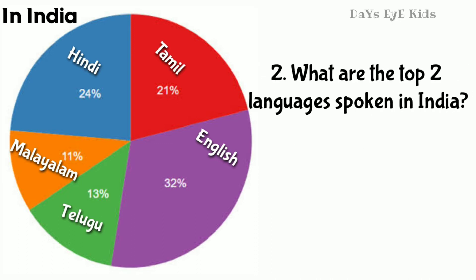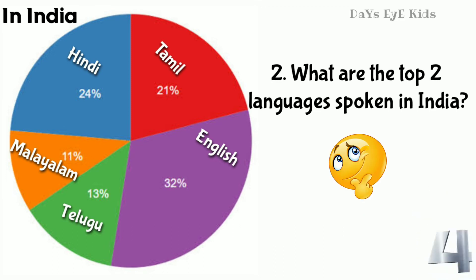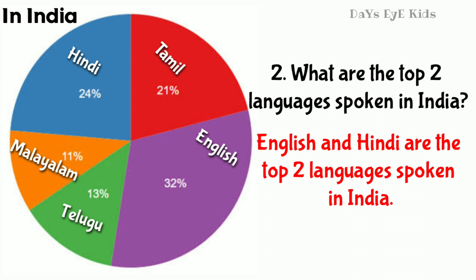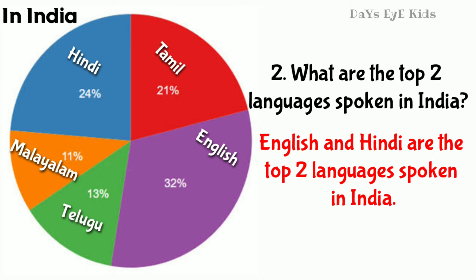What are the top two languages spoken in India? English and Hindi are the top two languages spoken in India.